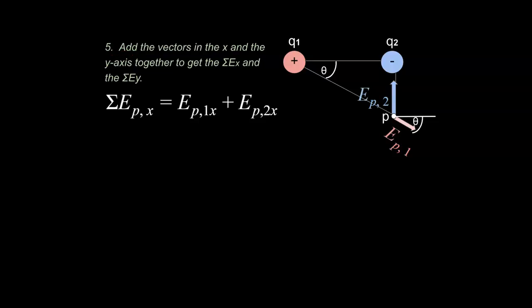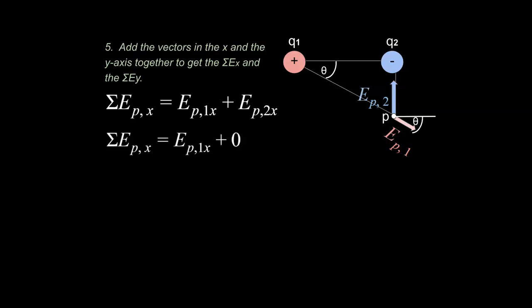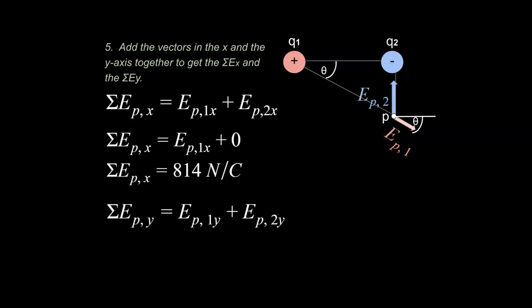Step five: add the vectors in the x and y axes together to get the sum of the vectors in each direction. For the x-axis: EP1 has an x component, but EP2 does not — its contribution in x is zero. Adding them gives 814 newtons per coulomb. For the y-axis, it gets trickier — one component points up and one points down, so the signs matter.